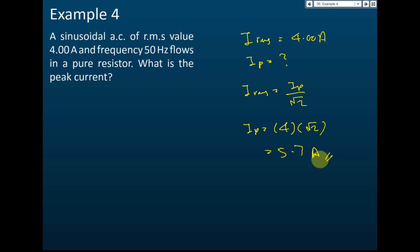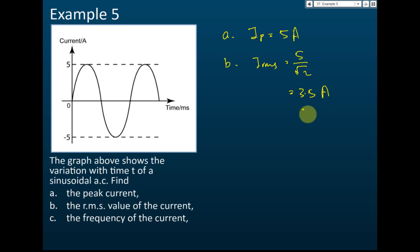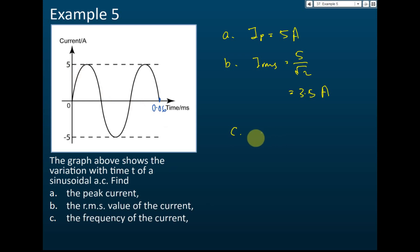Example five: The graph shows the variation with time of a sinusoidal alternating current. Part a: the peak current I_p equals 5 ampere. Part b: the root mean square current is 3.5 ampere. Part c: find the frequency. For frequency you need a time value from the graph — for example, 0.06 seconds. Use the formula f equals 1 over T, where T is the period.